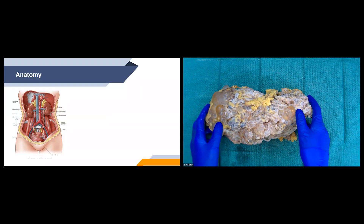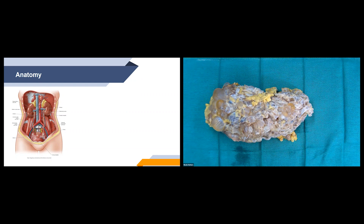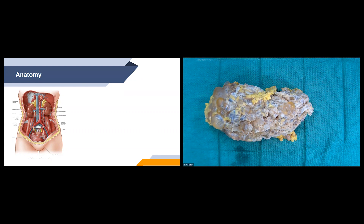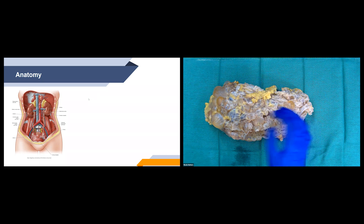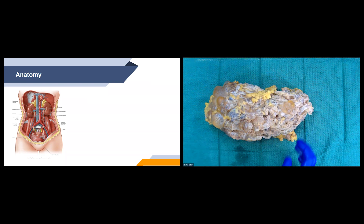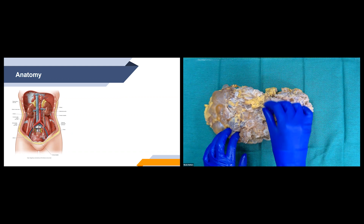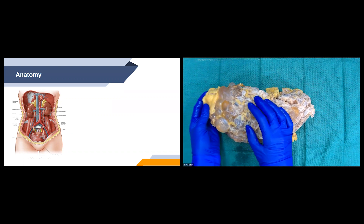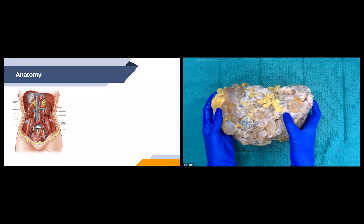Now we'll go over some of the anatomy associated with the kidneys. The kidneys are bean-shaped retroperitoneal organs located on either side of your spine below your ribs. Each kidney is about the size of a large fist. The blood supply and drainage to the kidneys is through the renal artery and vein. The fat surrounding the outside of the kidney is the perinephric soft tissue.